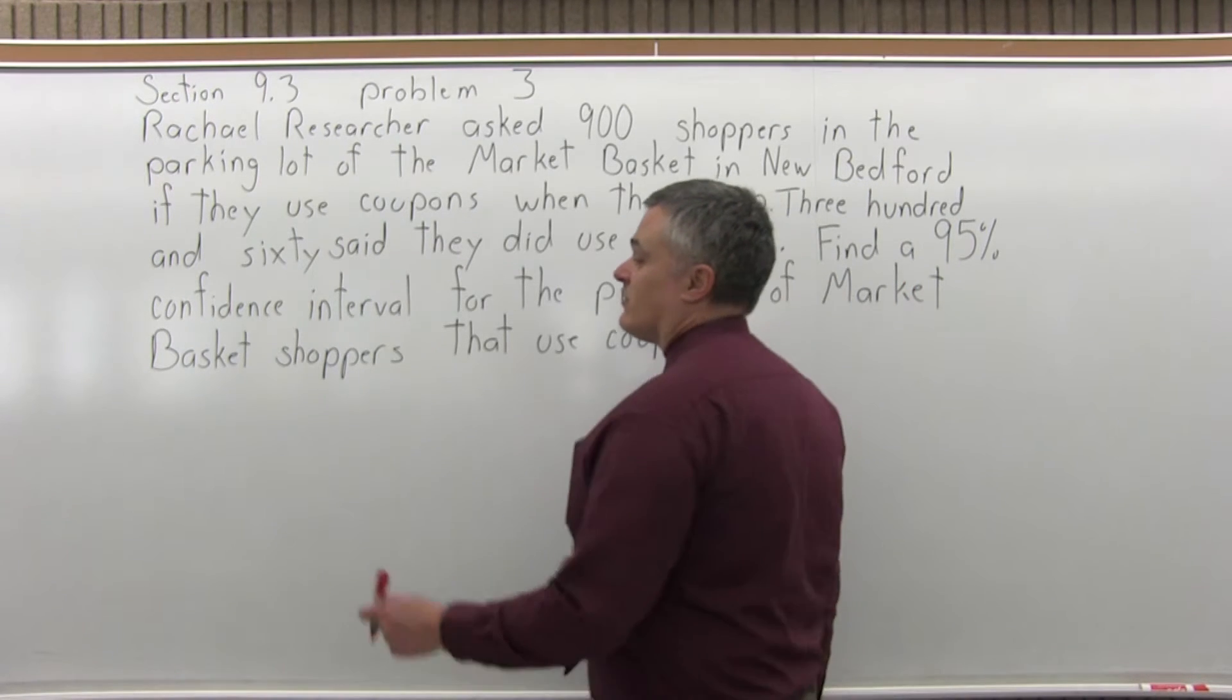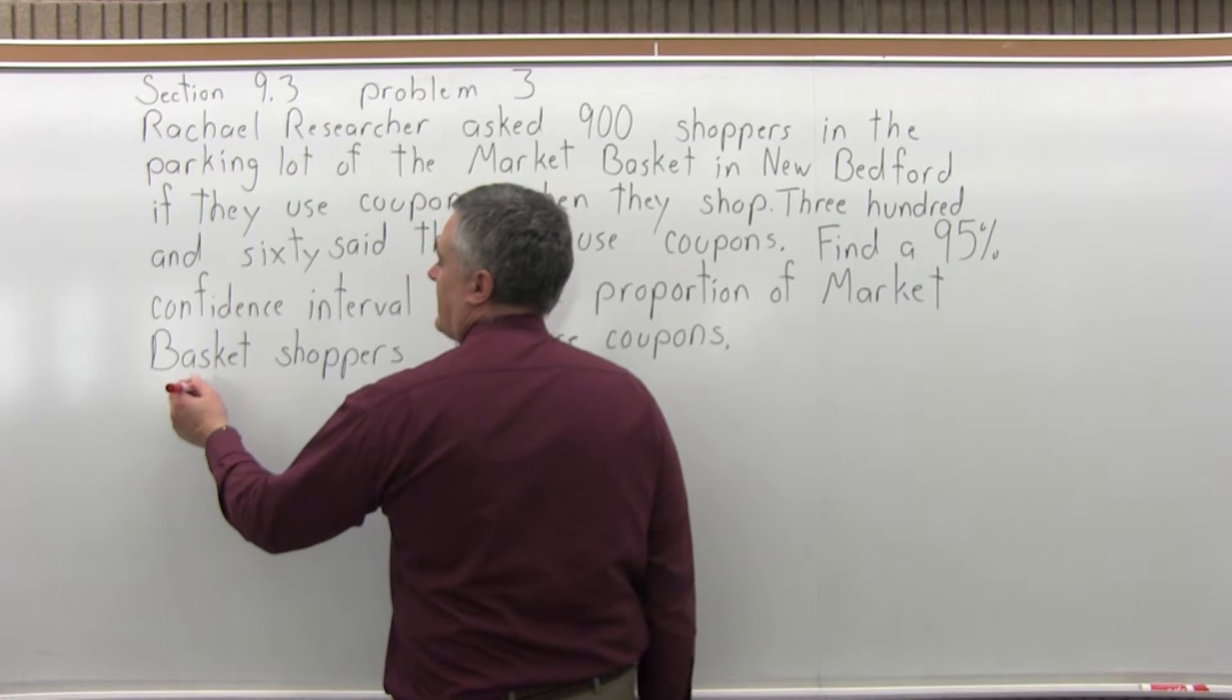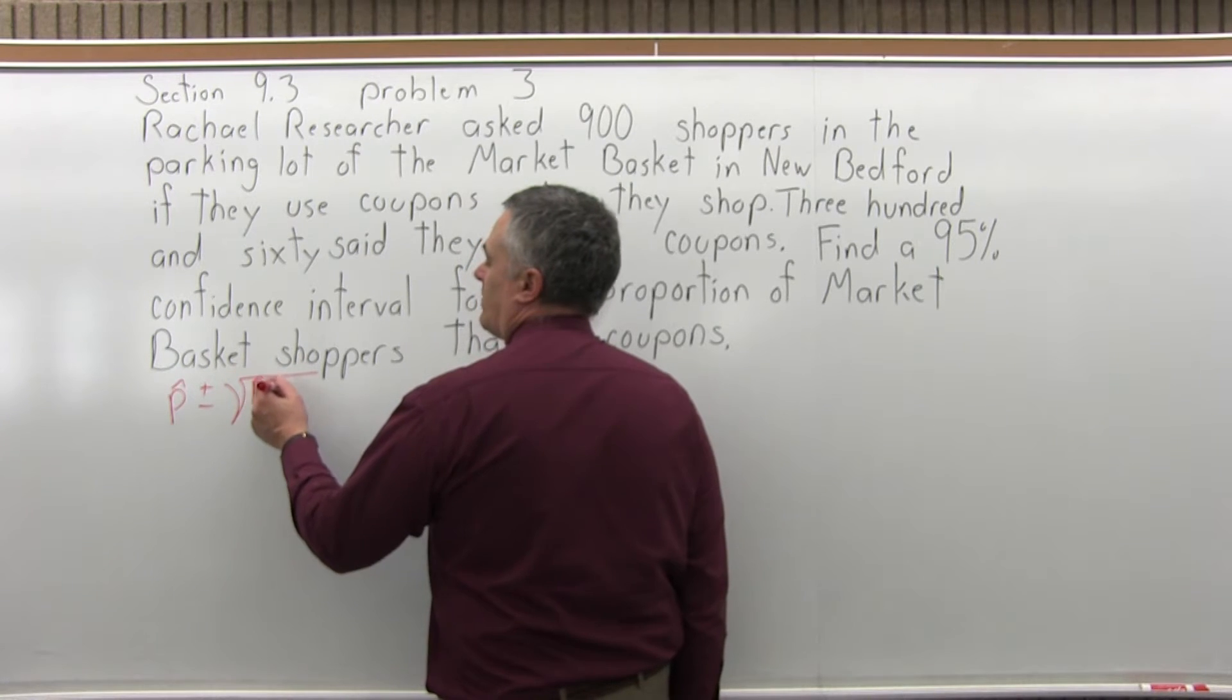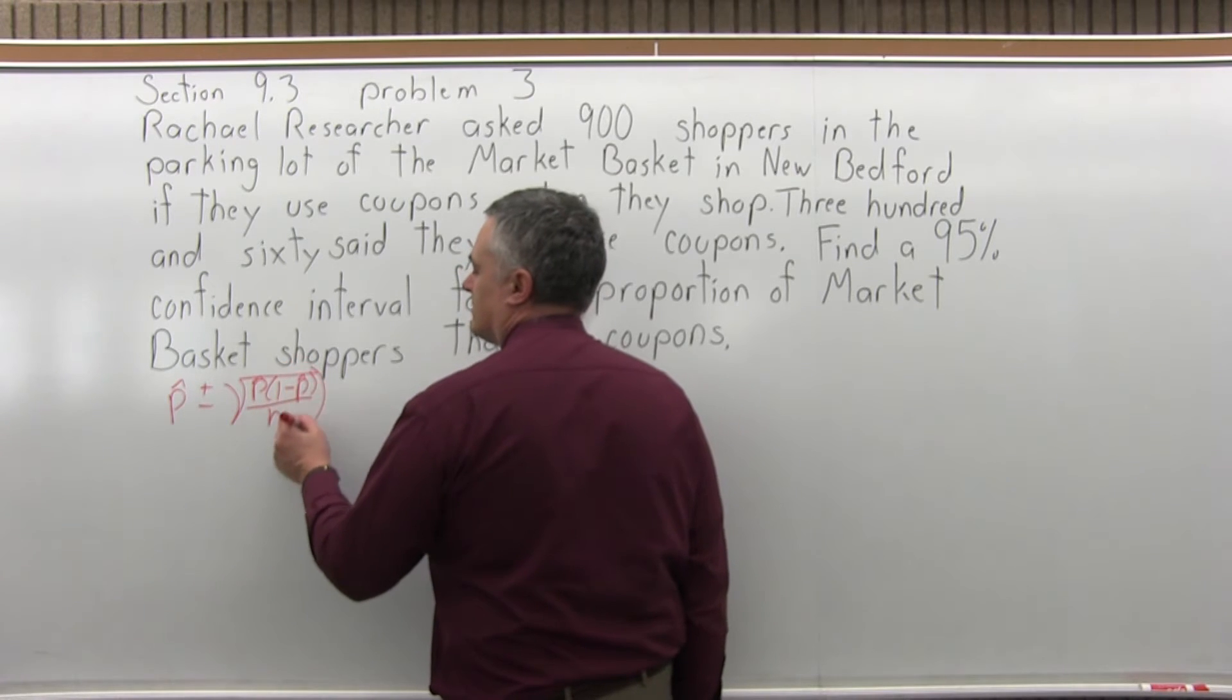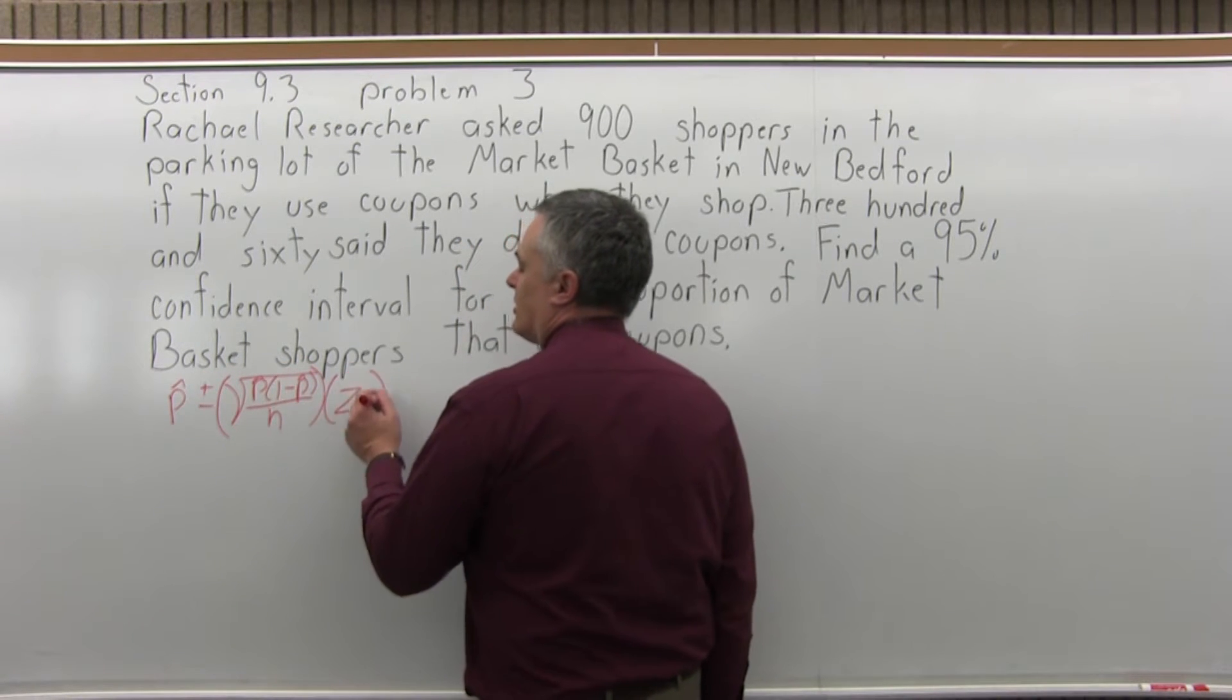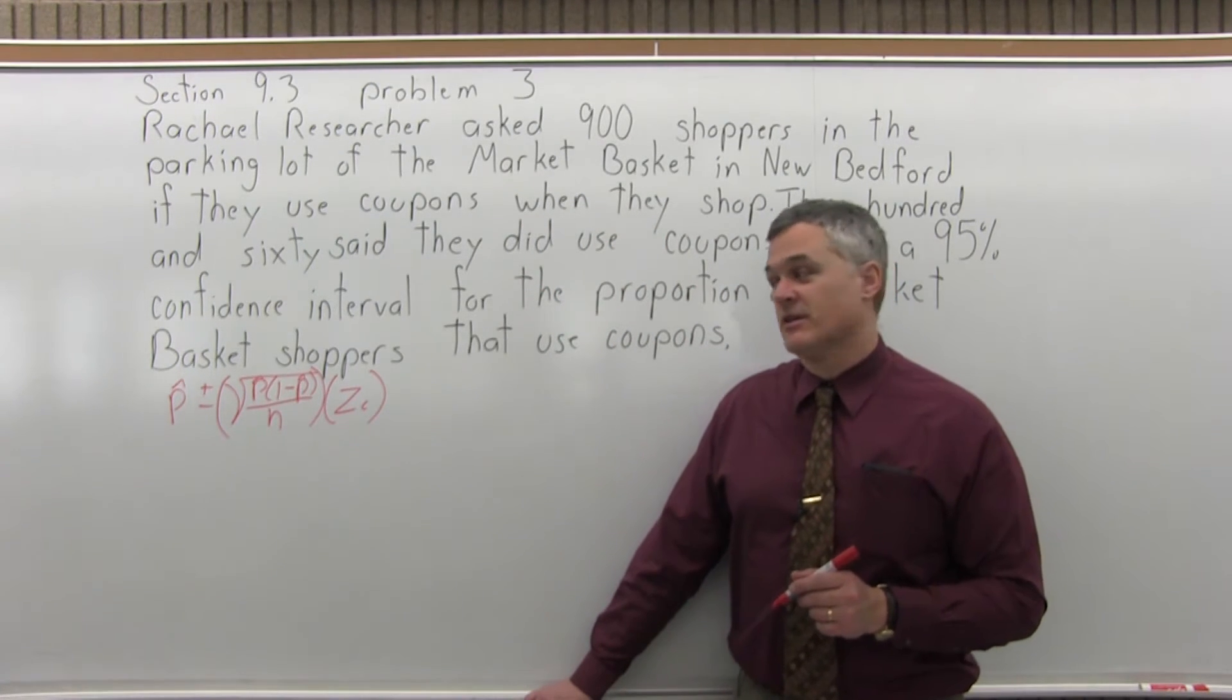A confidence interval for a population proportion is p hat plus or minus the square root of p hat times 1 minus p hat over n, all times z sub c, the confidence coefficient. That's the formula we're going to have to fill in and calculate.